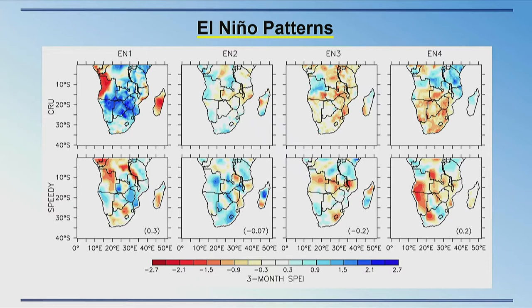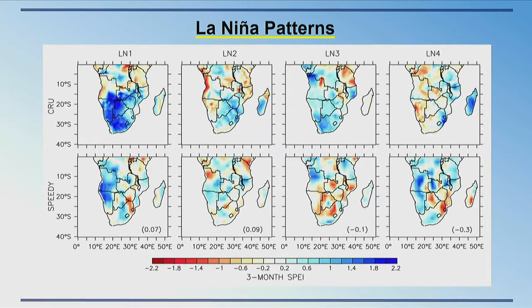Those were the El Niño patterns. Moving on to the La Niña patterns: again, SPEEDY is getting some regions better than others, and the last pattern again seems to be almost an inverse of the observed. Overall, the results for the La Niña patterns aren't too great yet.